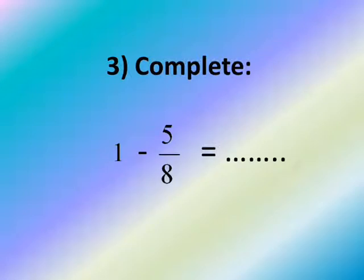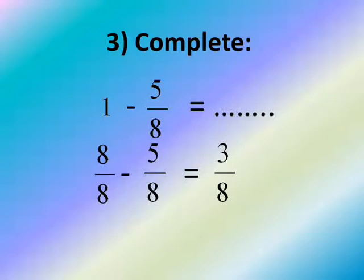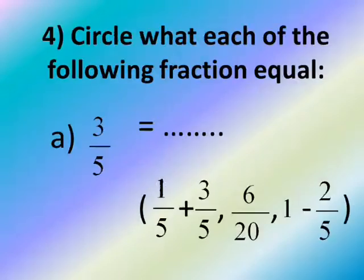1 minus 5 over 8 — we can't subtract a fraction from a whole number directly, so we must convert the 1 into a fraction. The number 1 can be written as 2 over 2, 3 over 3, 4 over 4, 5 over 5, etc. — any number over itself. So we write 8 over 8 since the denominator is 8. Then 8 over 8 minus 5 over 8 equals 3 over 8.